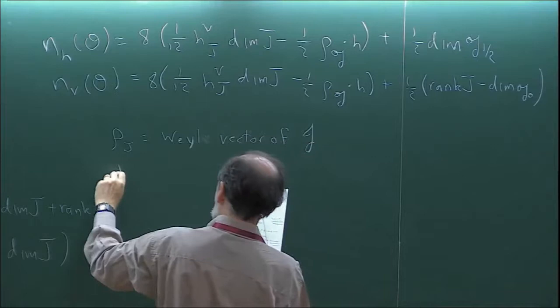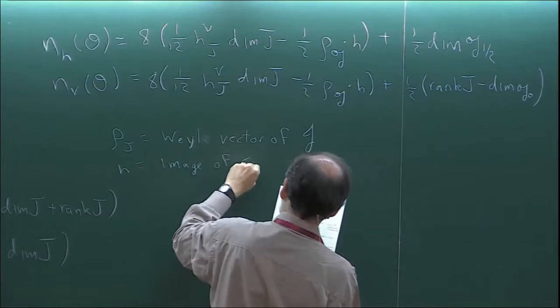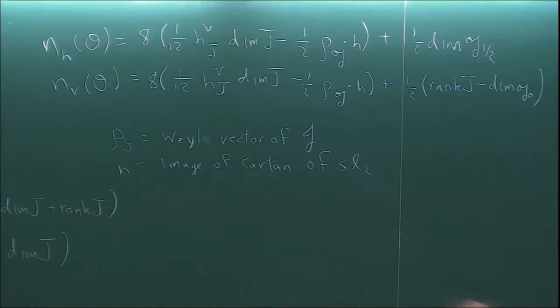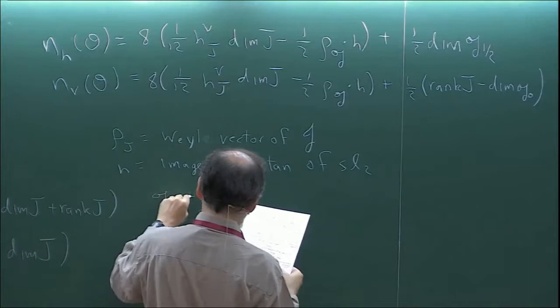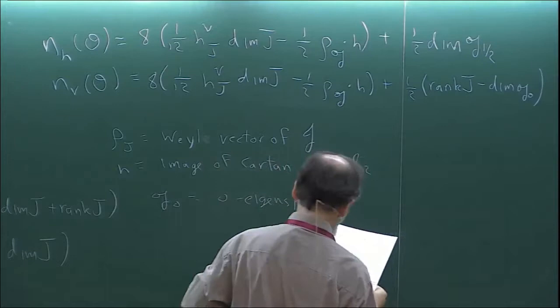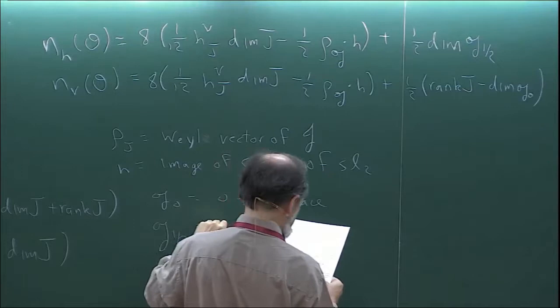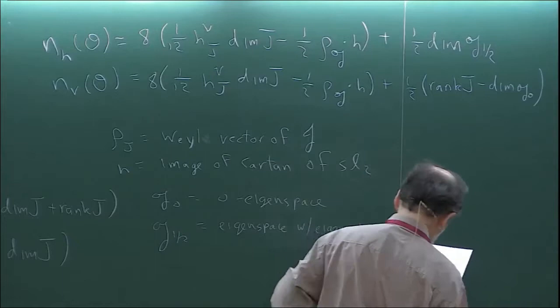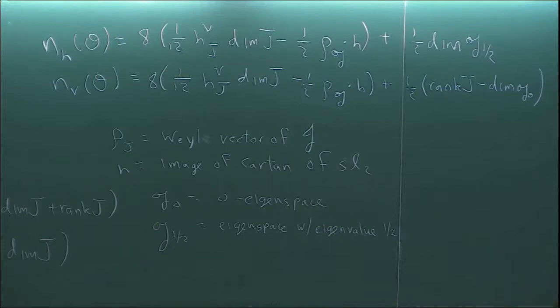Here rho_J is the Weyl vector for J. H is the image of the Cartan generator of SL(2) — nilpotent orbits are in correspondence to embeddings of SL(2) up to conjugacy, and H is the image of the Cartan generator. G_0 is the zero eigenspace of the Cartan generator of SL(2), and G_{1/2} is the eigenspace with eigenvalue one-half. I'm using the physicist's convention for how to normalize the Cartan generator.